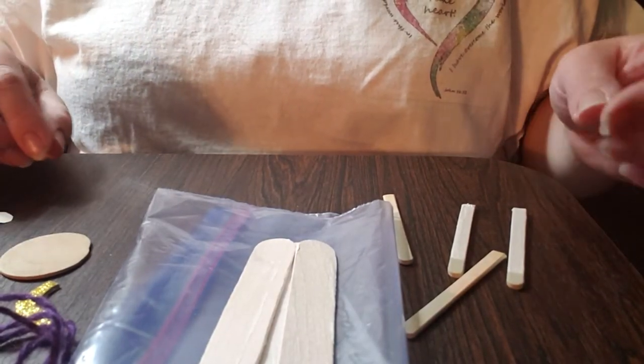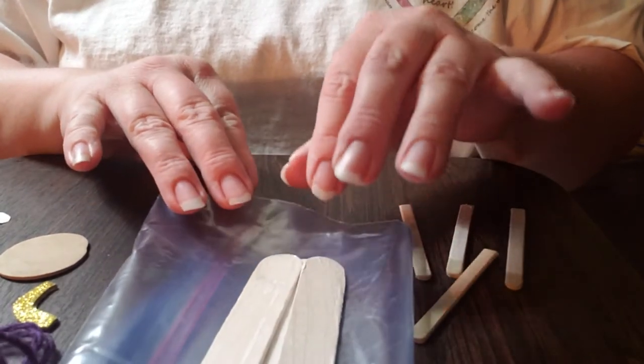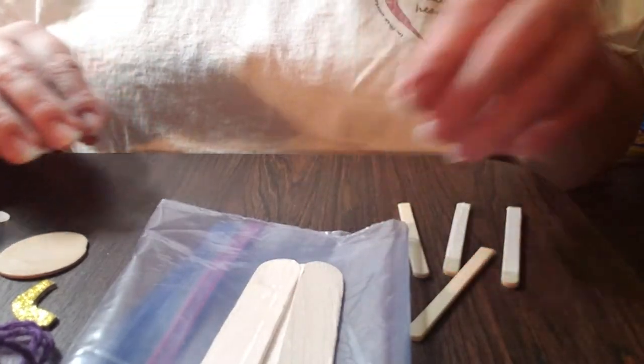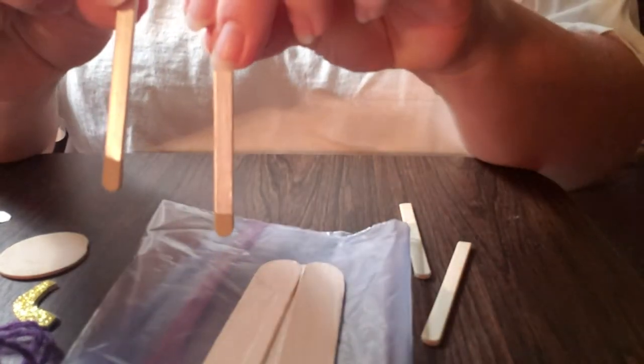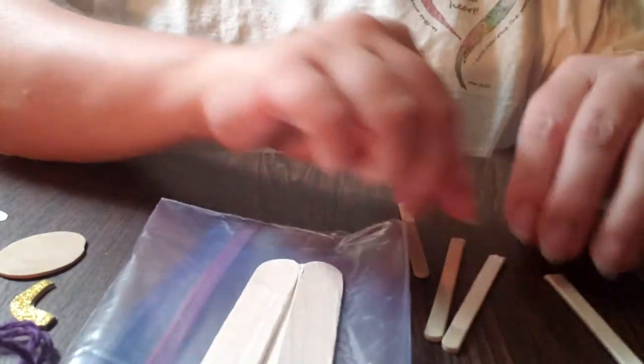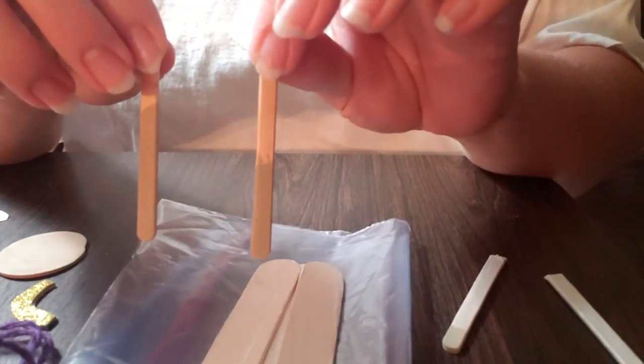Here are the supplies you should have. There should be the main body, which is the three white sticks here. You should have two arms, two feet, and legs.